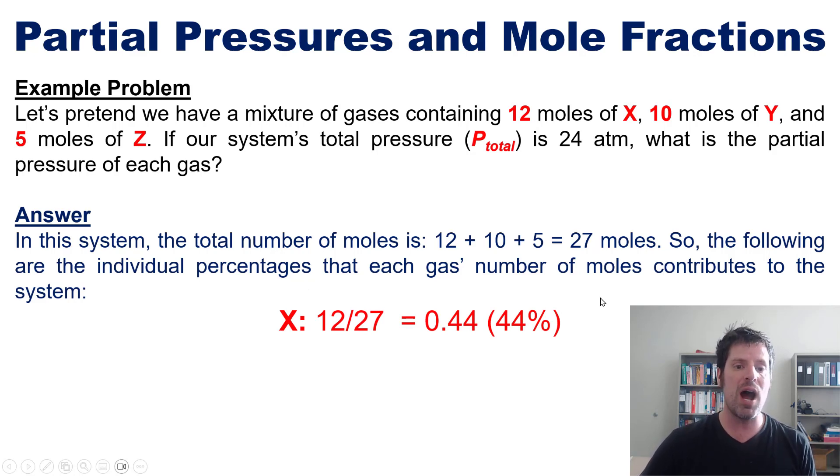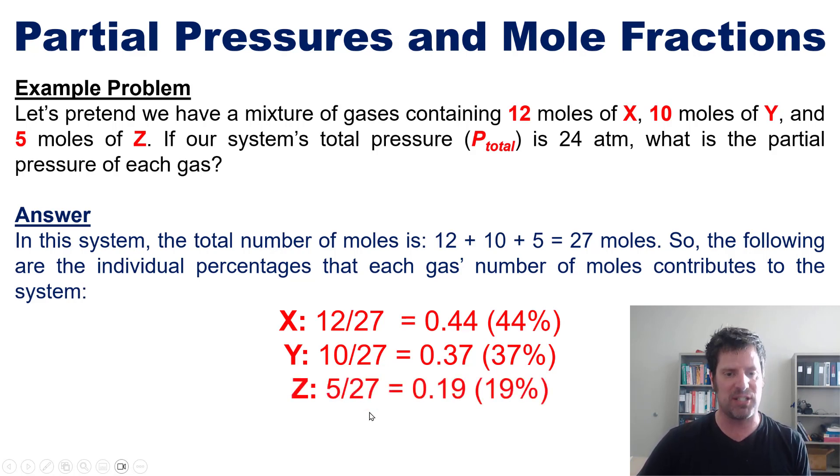By analogy, gas Y's mole percentage in the system is 37 percent. That is 10 moles of Y divided by 27 total moles times 100, and gas Z's percentage is 5 divided by 27 times 100 which comes to 19 percent. These are the individual mole percentages of each of these gases in the total system.